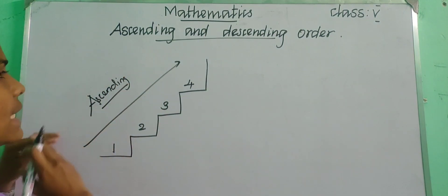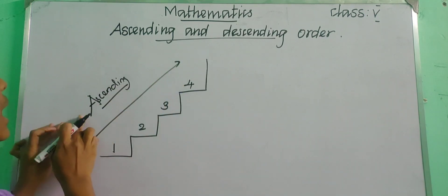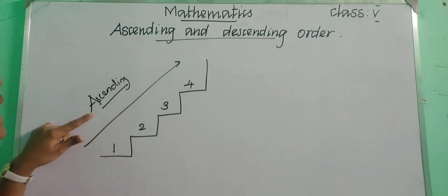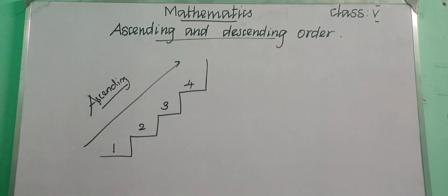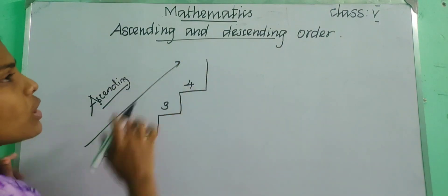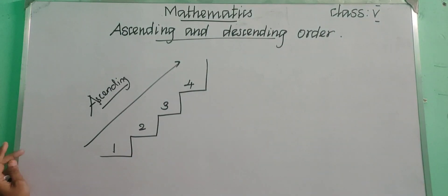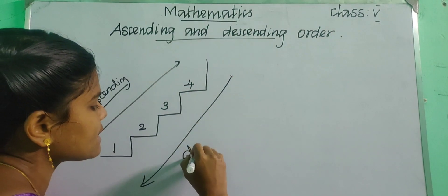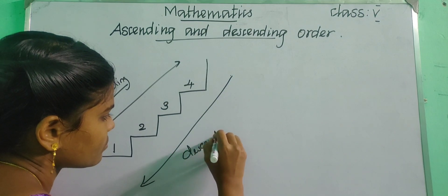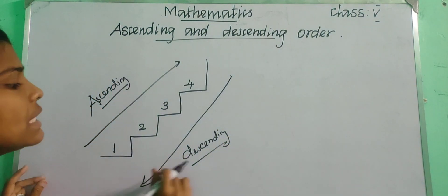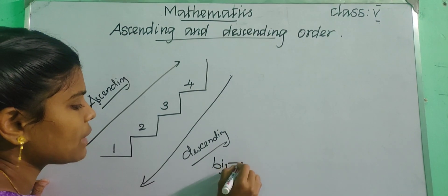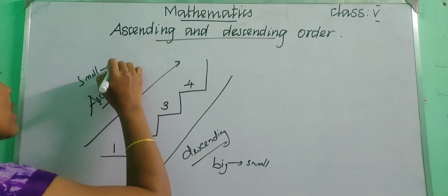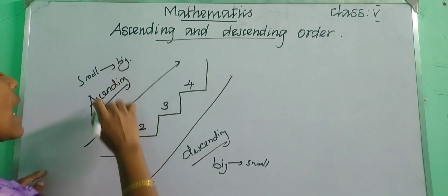Ascending: 'A' is the first, meaning the first one is the smaller number, so ascending is small to big. Descending order means if you are in the fourth floor of a building and you come back to the ground floor using the lift, that is called descending order. Descending means big to small. So: small to big is ascending order, and big to small is descending order.